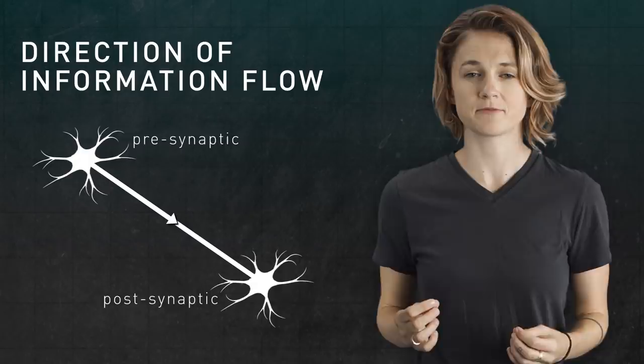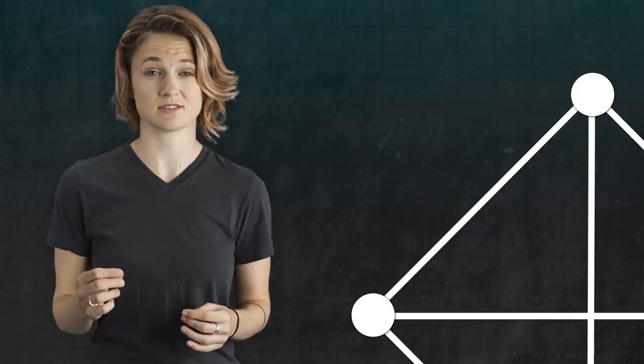A directed graph provides way more information than an undirected graph. Consider this undirected graph. It has six edges. What happens if we make it a directed graph? For each edge, there are three possible directions: this way, this way, or both ways. That means there are 3 to the 6, or 729, possible directed graphs.